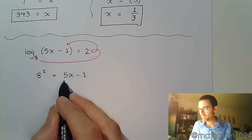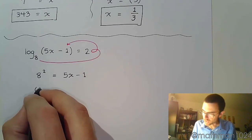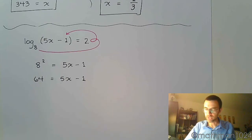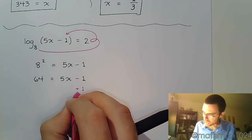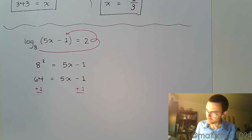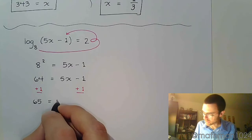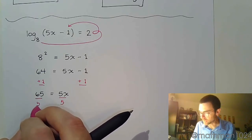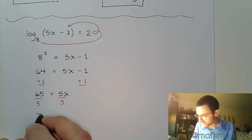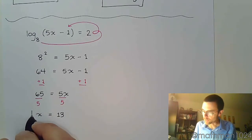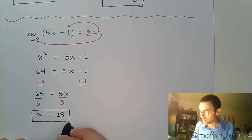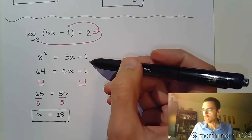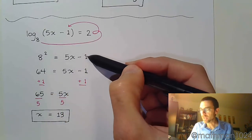This expression inside is just linear. So 8 squared is 64, and I've got 5x minus 1. Just a couple of steps and I'm done. Add 1 to both sides: 65 equals 5x. Then divide both sides by 5, so x equals 13. By rewriting from logarithmic form into exponential form, I get a nice linear equation to solve, and I'm done.